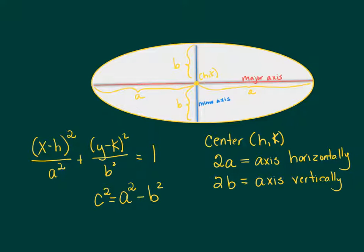c² is significant for us, but this time it's found by taking the major axis squared and subtracting the minor axis squared. We take the big number minus the small number and that gives us c². When we solve for c, c tells us the distance from the center to the foci.